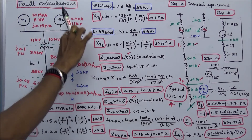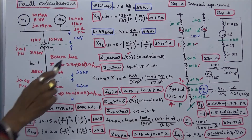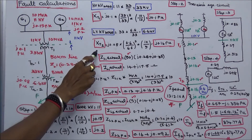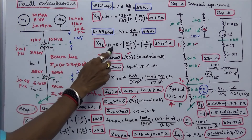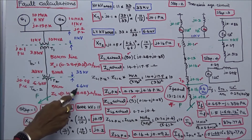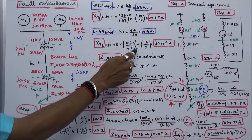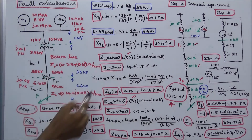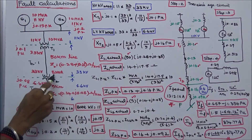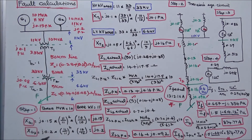The voltage zones are: 11 kV, 33 kV, and 6.6 kV. Next, I calculate the per-unit reactance of Transformer 2. The given reactance j0.08 is multiplied by (6.6/6.6)² × (SB2/SB1) = (10/5), giving XT2 = j0.16 per unit.